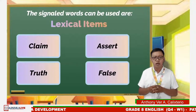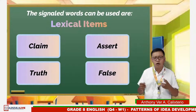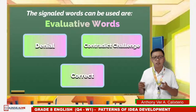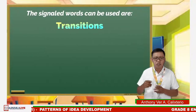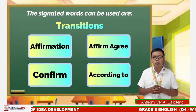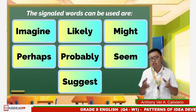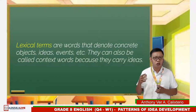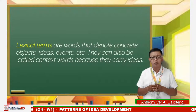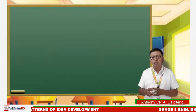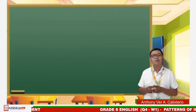The signal words used in the claim and counterclaim pattern: In lexical terms, the purpose words are claim, assert, give the truth, or it's false. Evaluative words function to make a denial, contradict, challenge, or correct. Transitional words include affirmation, affirm, agree, confirm, and according to. Other signal words are imagine, likely, might, perhaps, probably, seem, suggest. Lexical terms are words that denote concrete objects, ideas, events, and can be called context words because they carry ideas. To counterclaim or argue a claim, consider a different or contrary opinion, then provide evidence to back up your argument.